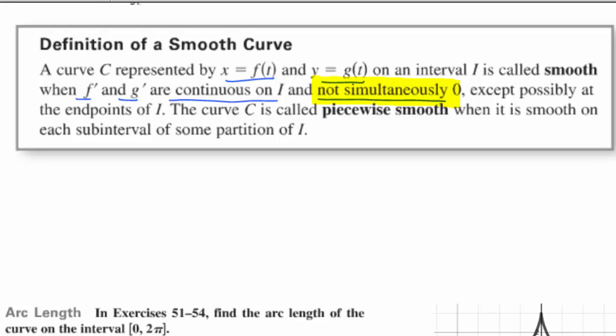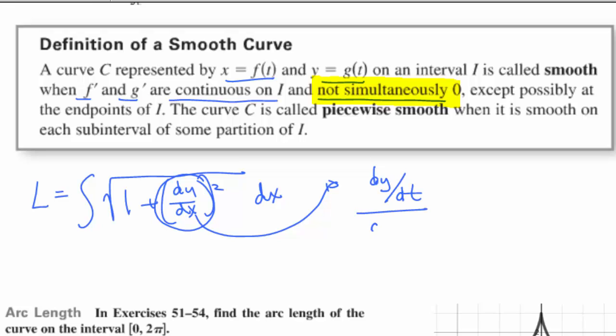Why is that? Well, on our arc length that we had before, it was the integral of the square root of 1 plus dy dx squared with respect to x. And parametric, what is dy dx? It's dy dt divided by dx dt.